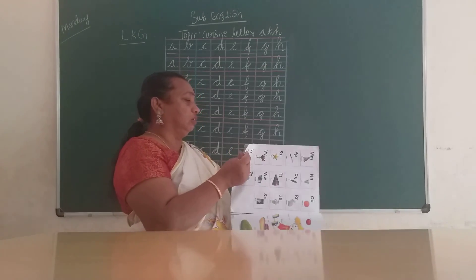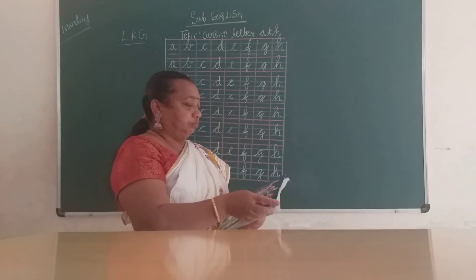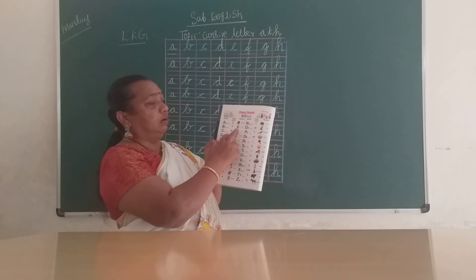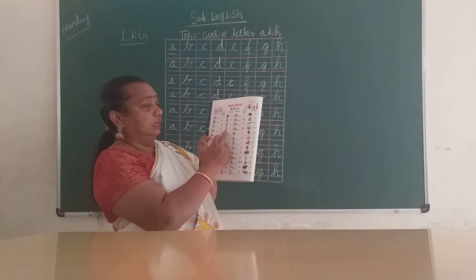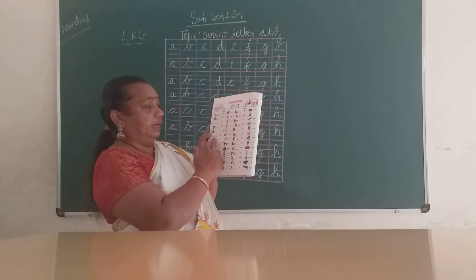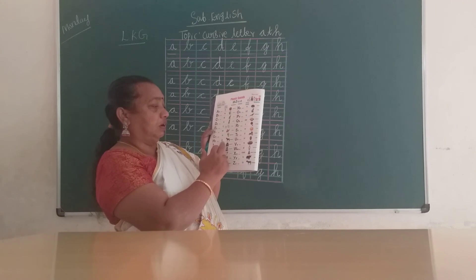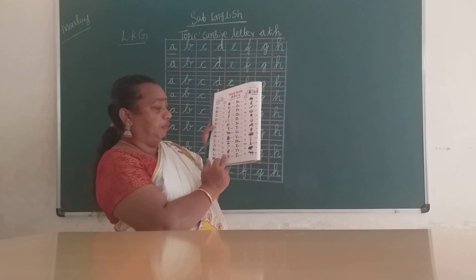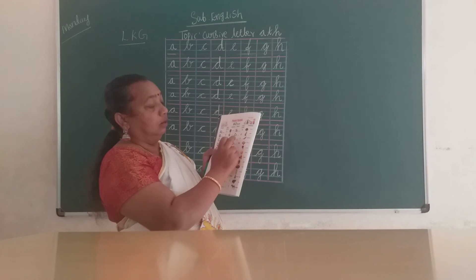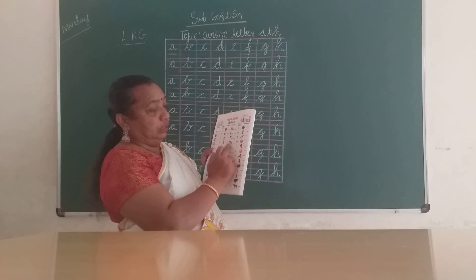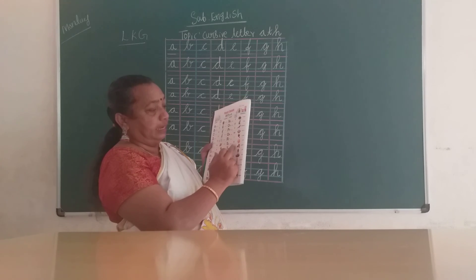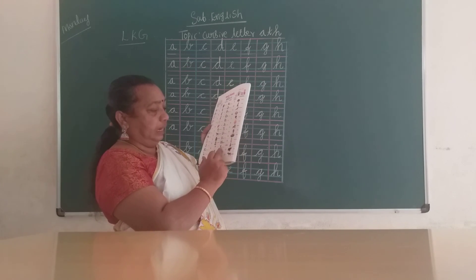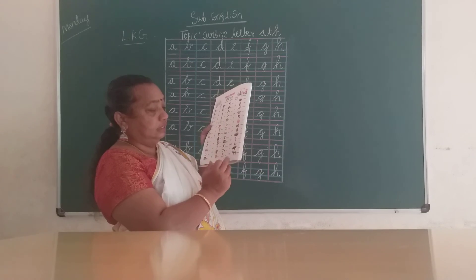Now take out your phonetic sounds. A sound — A for /a/, B for /b/, C for /k/, D for /d/, E for /e/, F for /f/, G for /g/, H for /h/, I for /i/, J for /j/, K for /k/, L for /l/, M for /m/, N for /n/, O for /o/, P for /p/, Q for /qu/, R for /r/, S for /s/, T for /t/, U for /u/, V for /v/, W for /w/, X for /ks/, Y for /y/, Z for /z/.